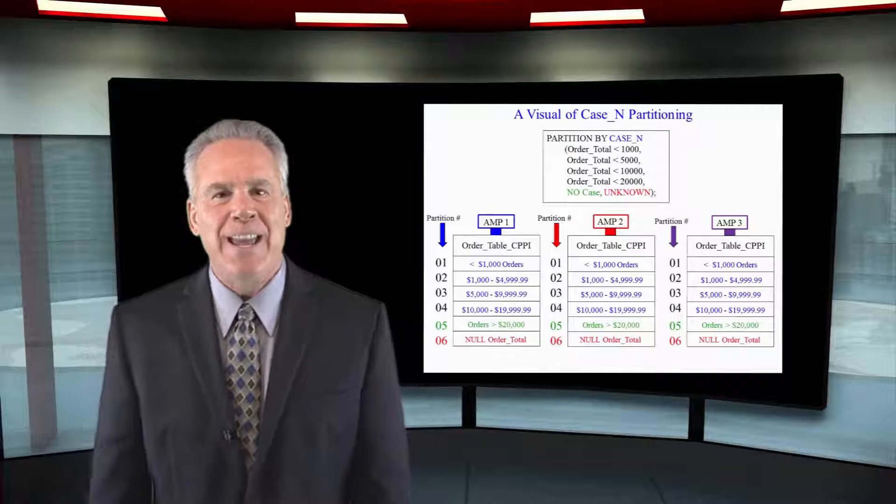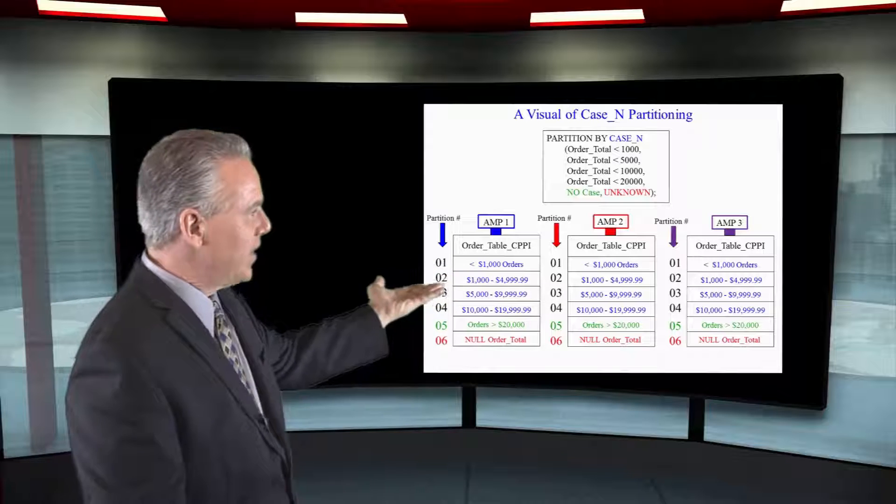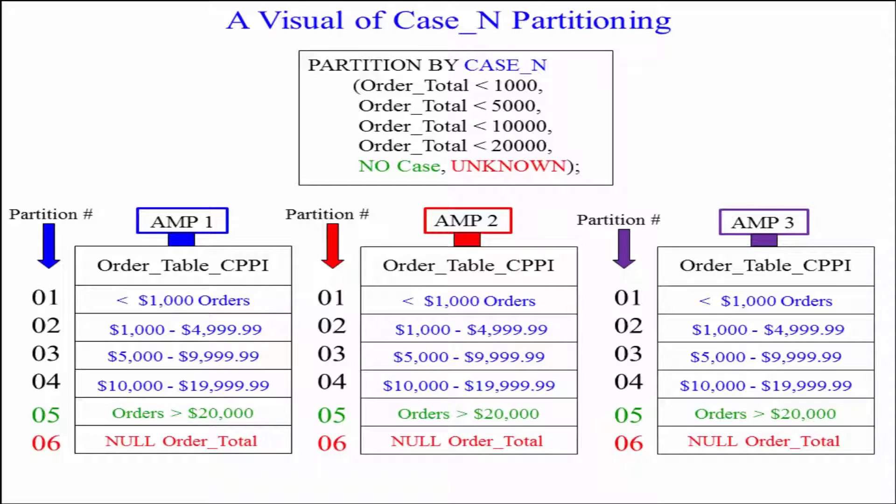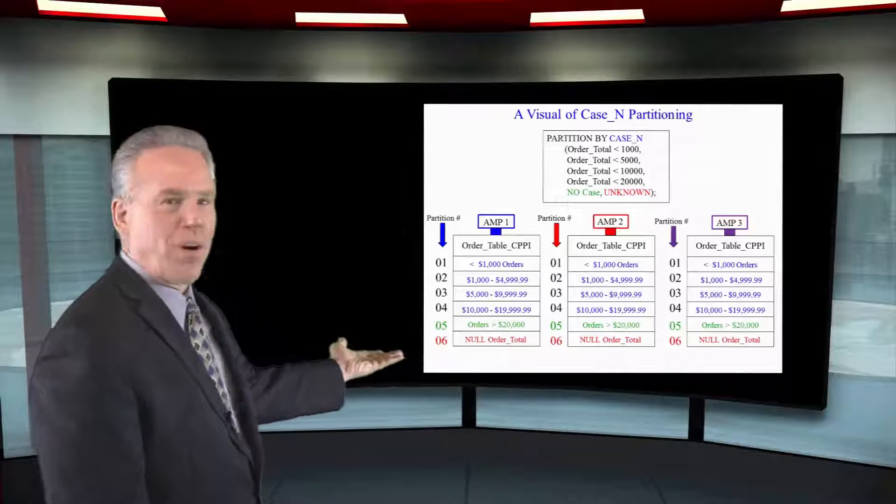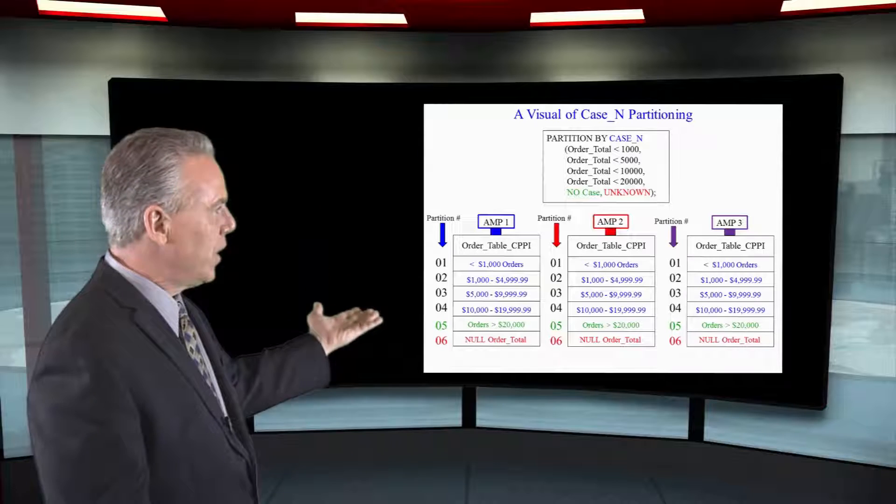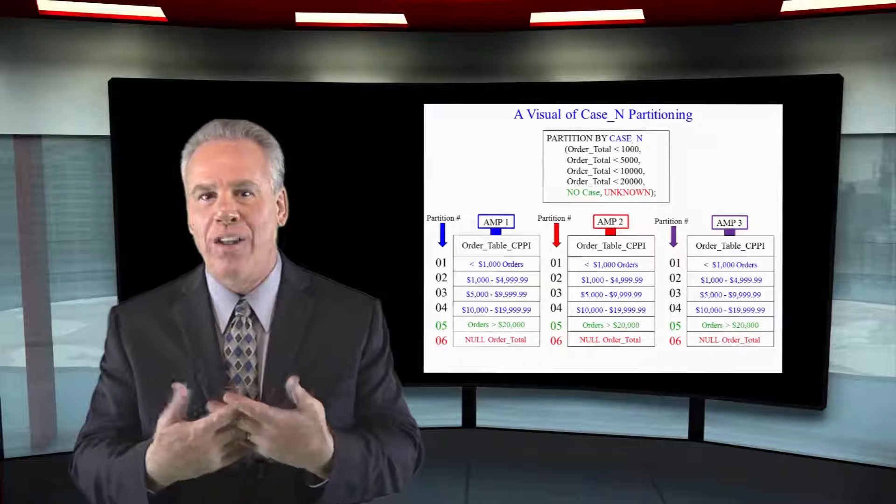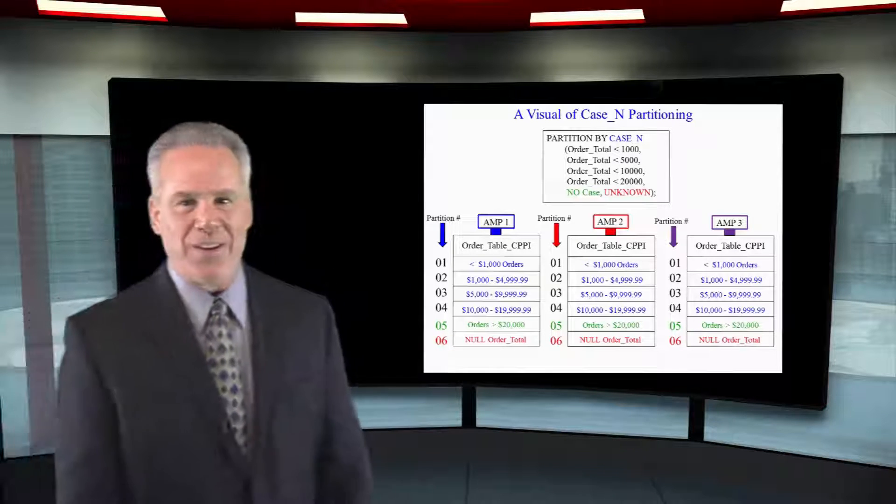This is what the table looks like when we partition by our CASE_N. All the order totals less than a thousand are in partition number one. Between that one thousand and five thousand, they're in partition two and so on. If it falls through all the way through the case, then it goes into the no case partition. And if the order total is null, it goes into the unknown partition.